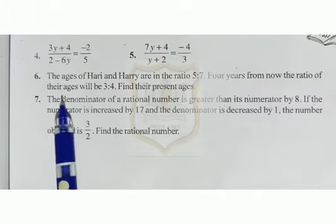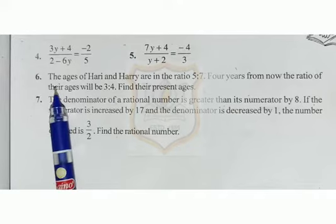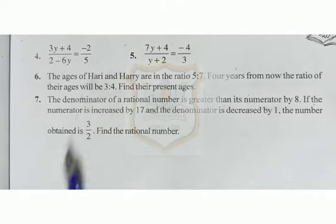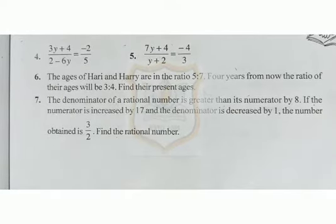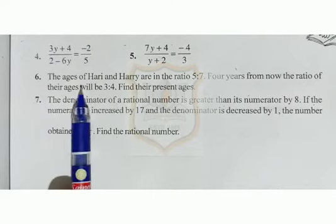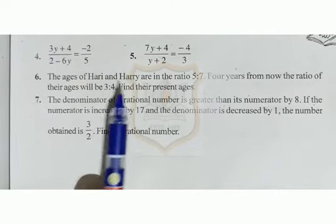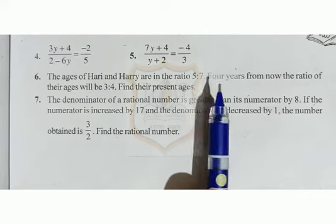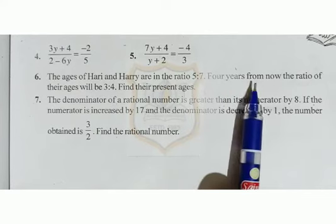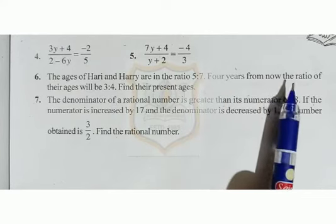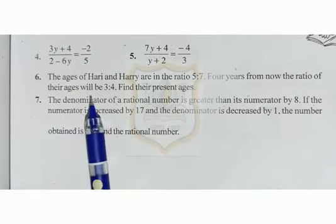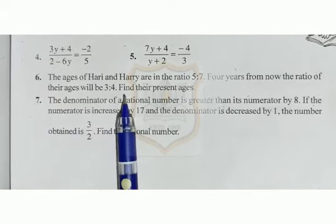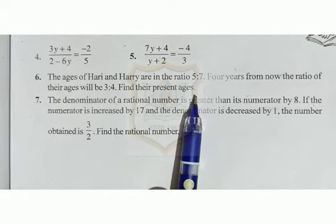The 4th and 5th sums you have to do by yourself. The 6th sum: the ages of Hari and Harry are in the ratio 5 to 7. Four years from now the ratio of their ages will be 3 to 4. Find their present ages.